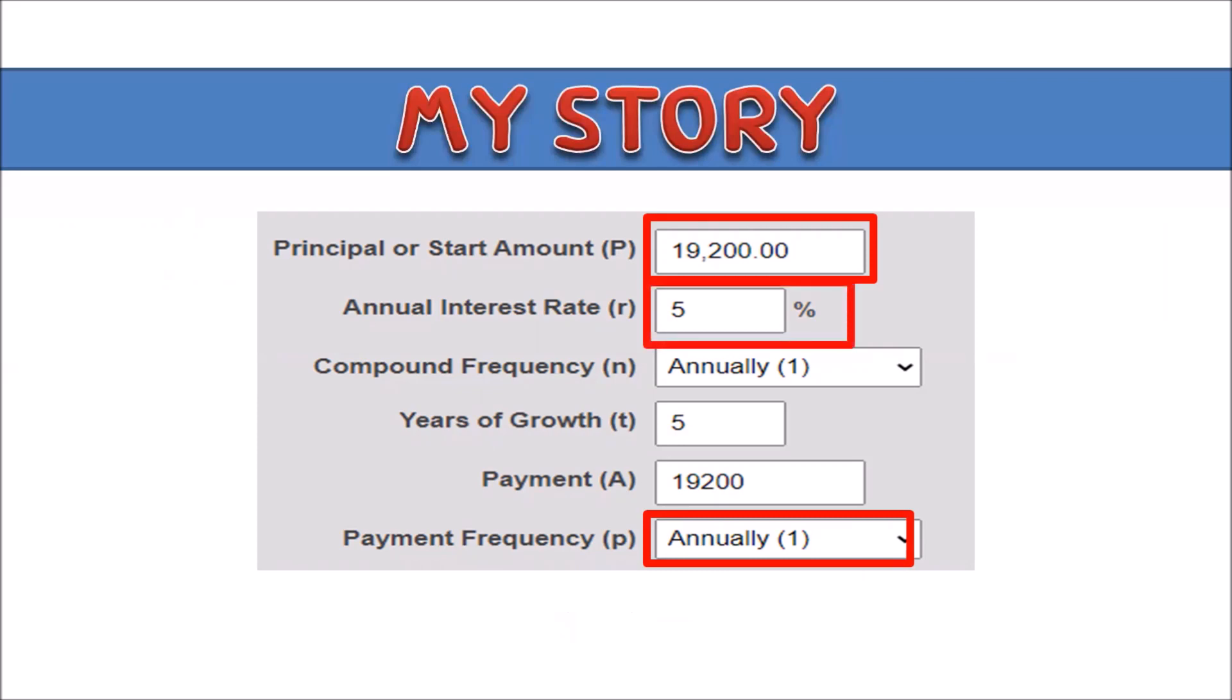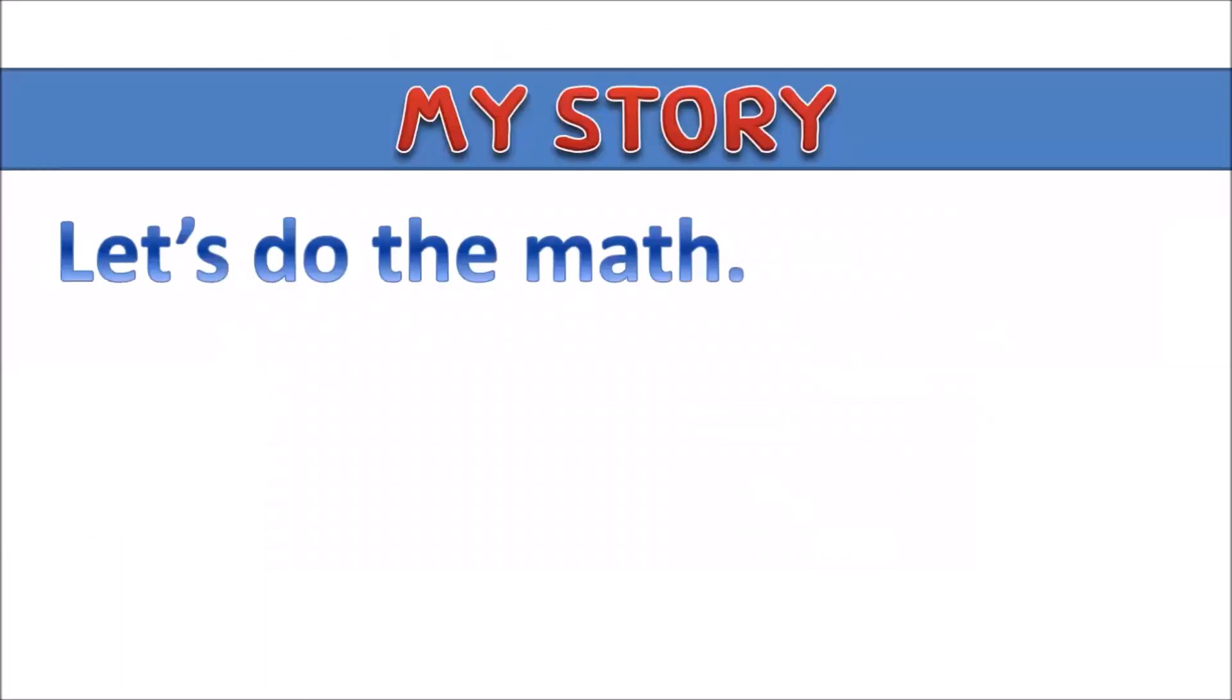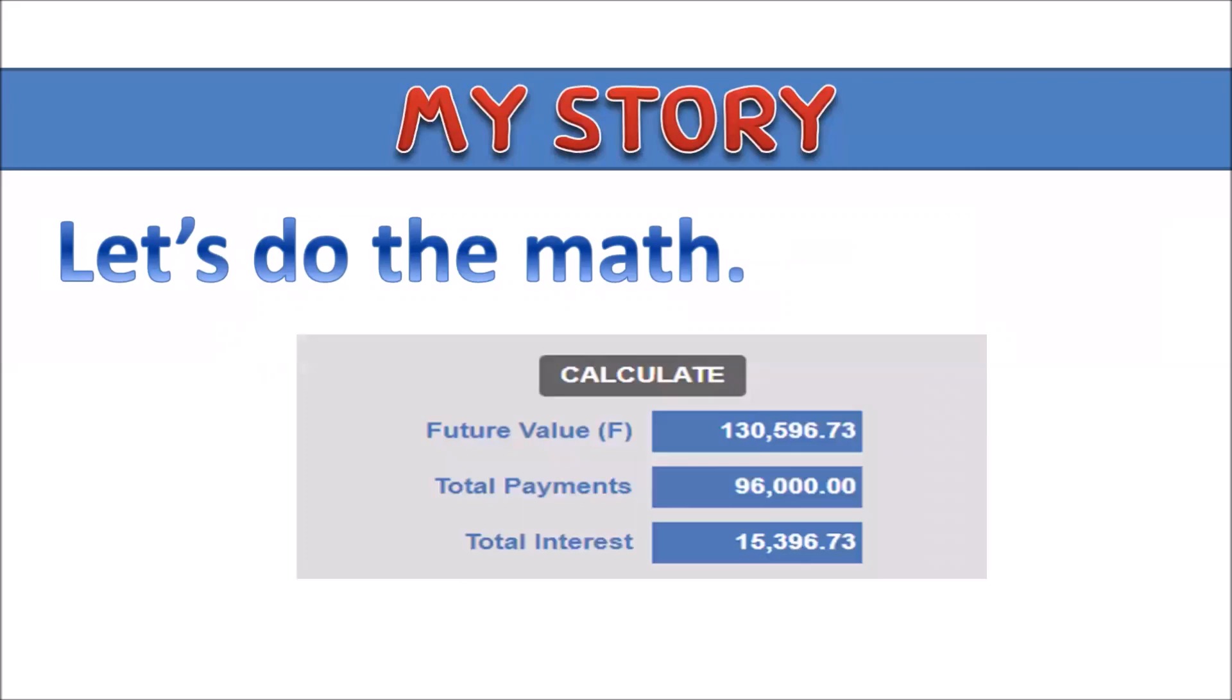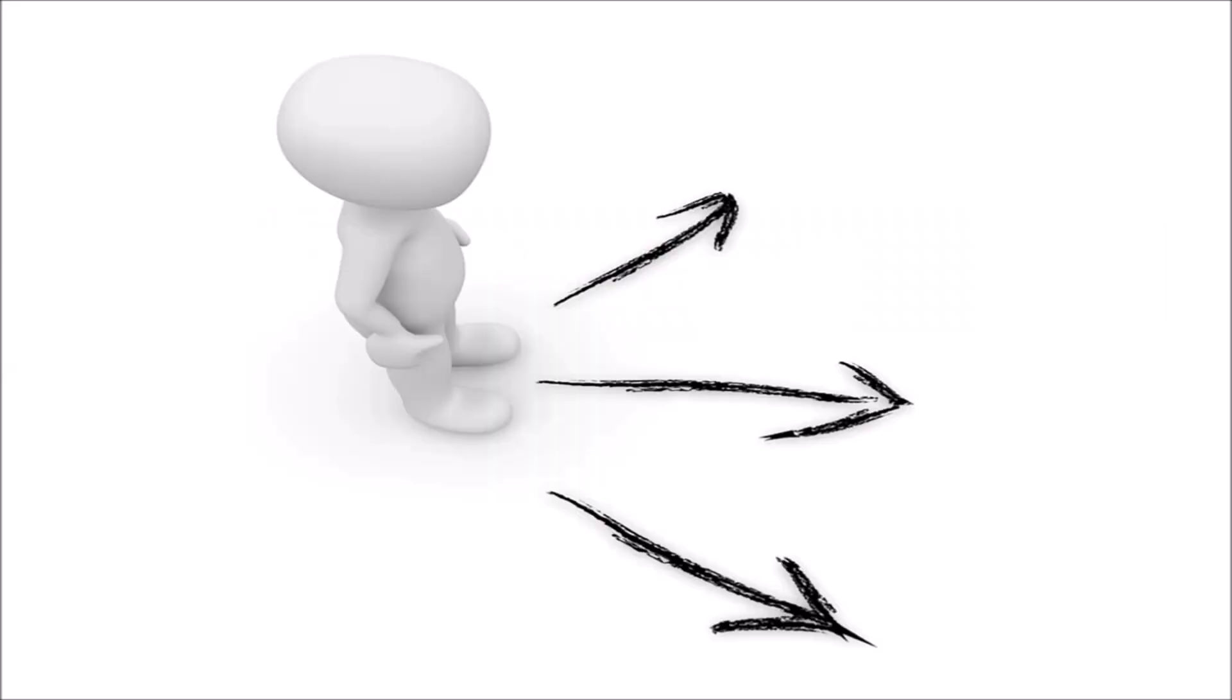This is what would happen. With the power of compound interest, with the power of compound interest we put that 19,200 for the next five years with an interest of 5 percent per year we will be having an estimated future value of 130,596.73 baht in your bank account. By the way, this is an estimated future value.